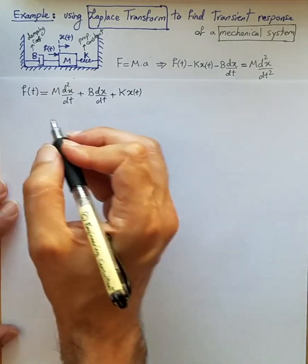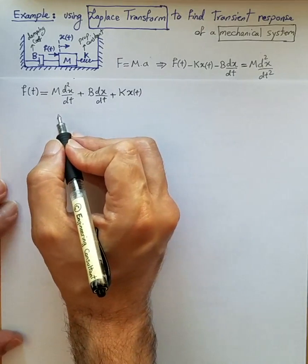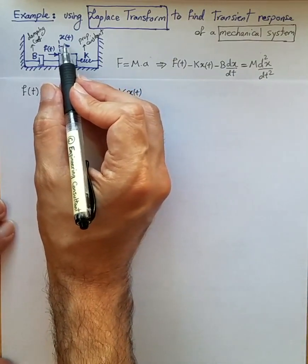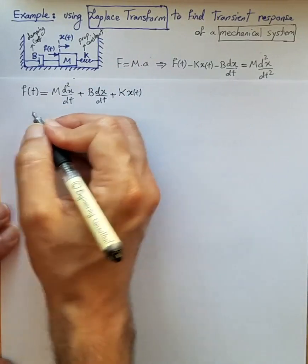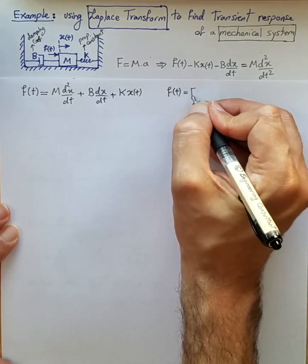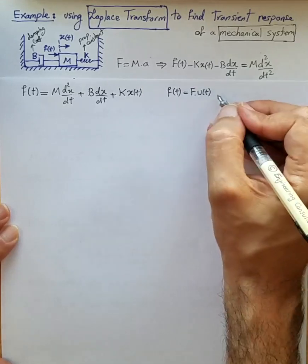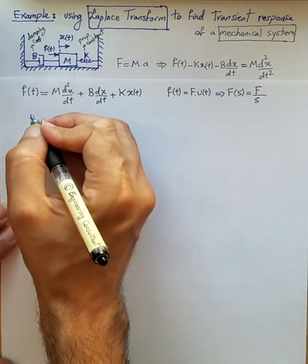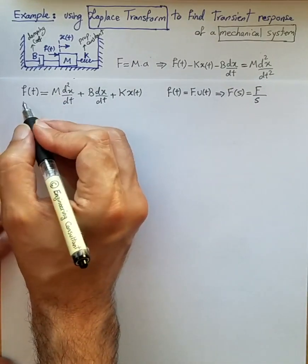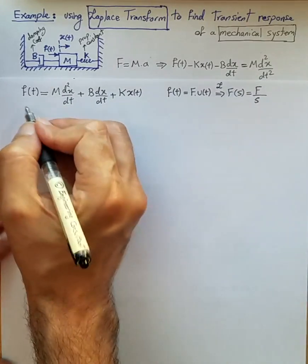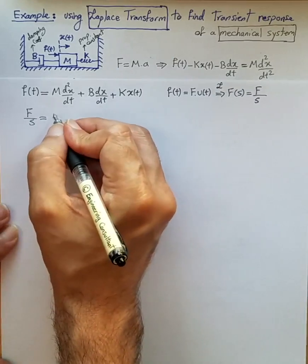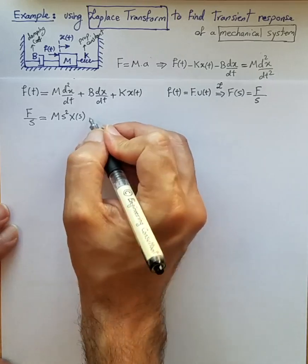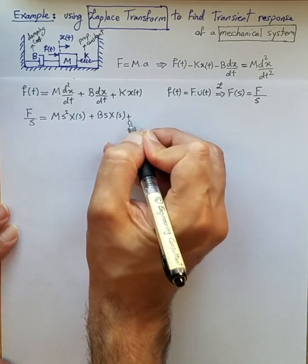We assume that the initial state of the mechanical system was zero — meaning initial displacement is zero. Assuming the applied force f(t) is a constant force starting from time zero, represented by f·u(t), then F(s) is just the constant f over s. Taking the Laplace transform of both sides, we get F/s equal to m·s²·X(s), assuming again initial displacement is zero.